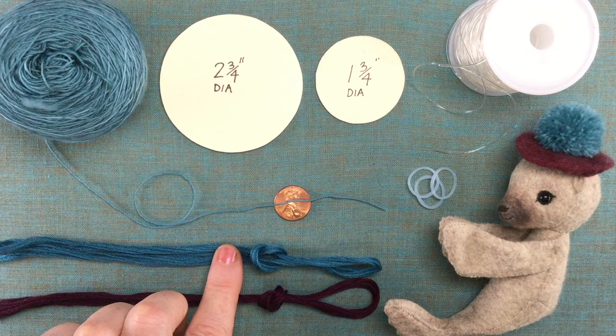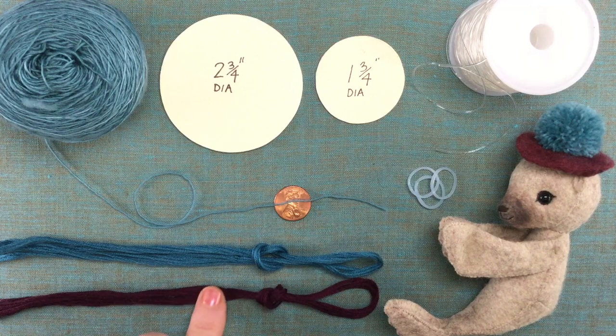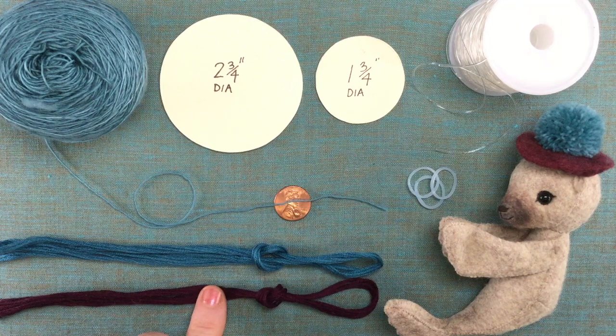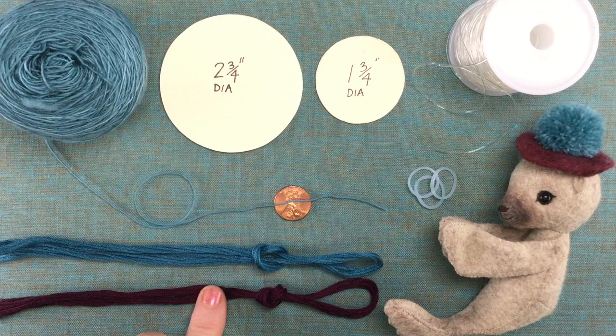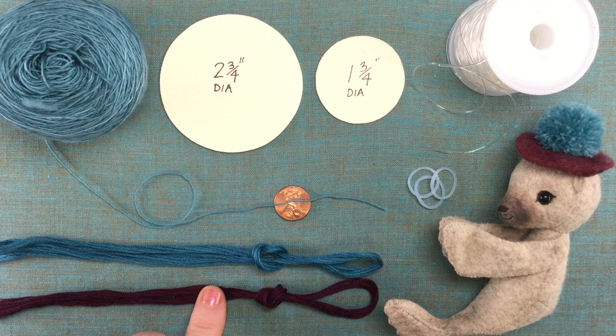If you want to match my color palette, you can use this thread to help find a yarn color. This color is DMC 154 dark grape, which matches the garnet from my felt color card.